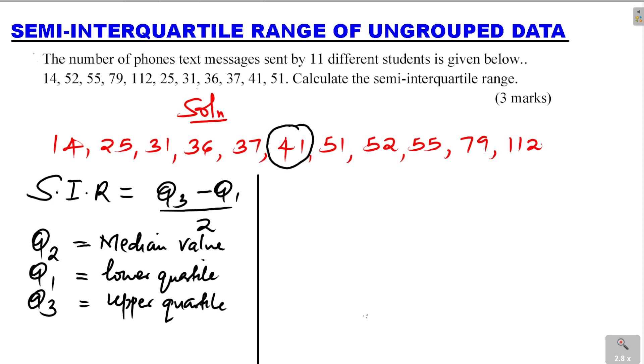Because to the left of 41 we have 5 values, and to the right of 41 we have 5 values. So 41 is the median, and that is what we refer to as Q2.